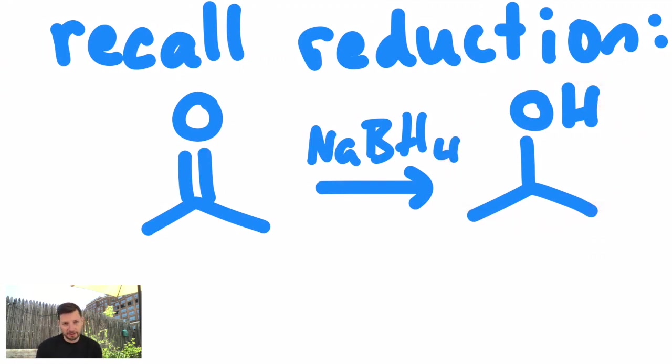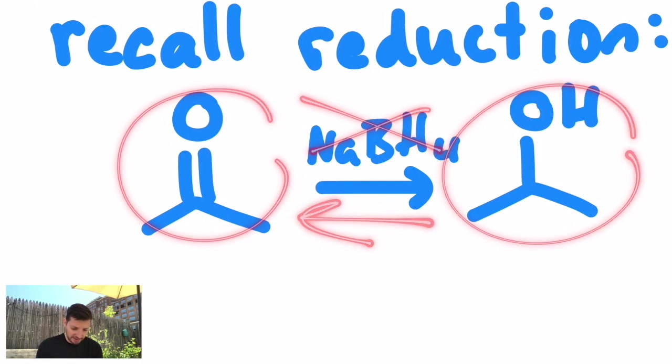Today we're going to focus on doing the opposite transformation, what we call an oxidation. Totally different reagent, and the reverse transformation, taking things like alcohols and turning them into ketones. So let's see how we do this.